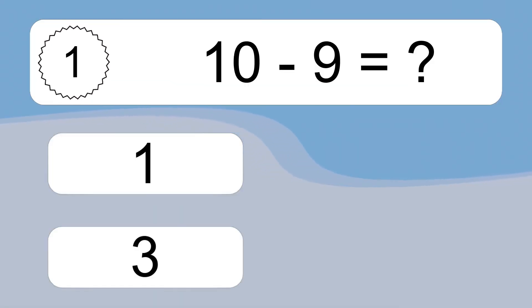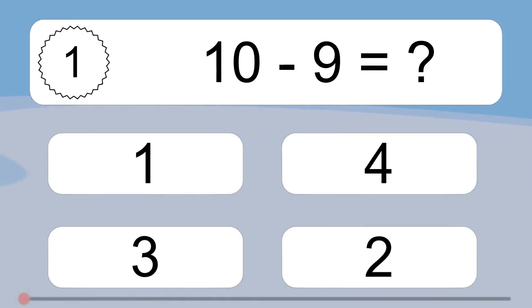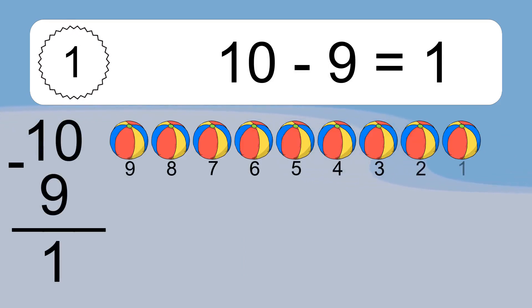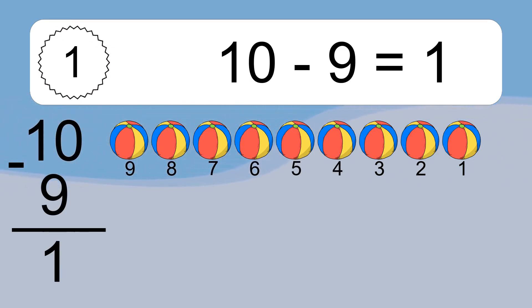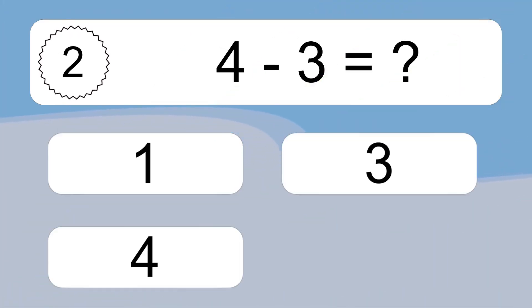10 minus 9 equals what? 10 minus 9 equals 1. Let's count it: 9, 8, 7, 6, 5, 4, 3, 2, 1.